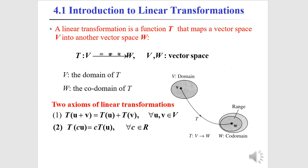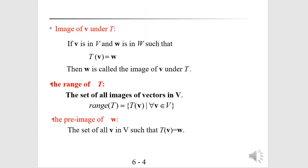Two axioms for linear transformations: T(u + v) = T(u) + T(v), and T(cu) = c·T(u). The image of v under T: if v is in V and w is in W such that T(v) = w, then w is called the image of v under T. The range of T is the set of all images of vectors in V: range of T = {T(v) : for all v in V}.